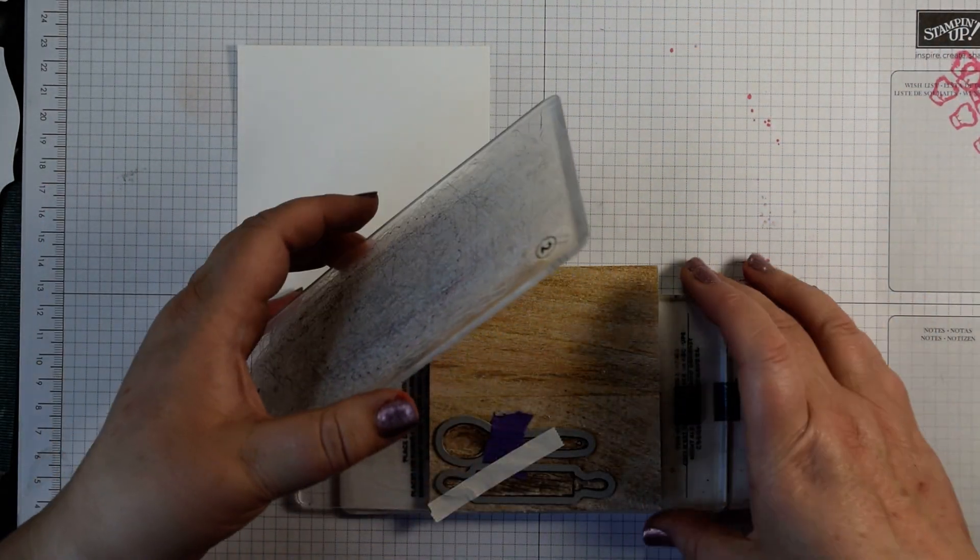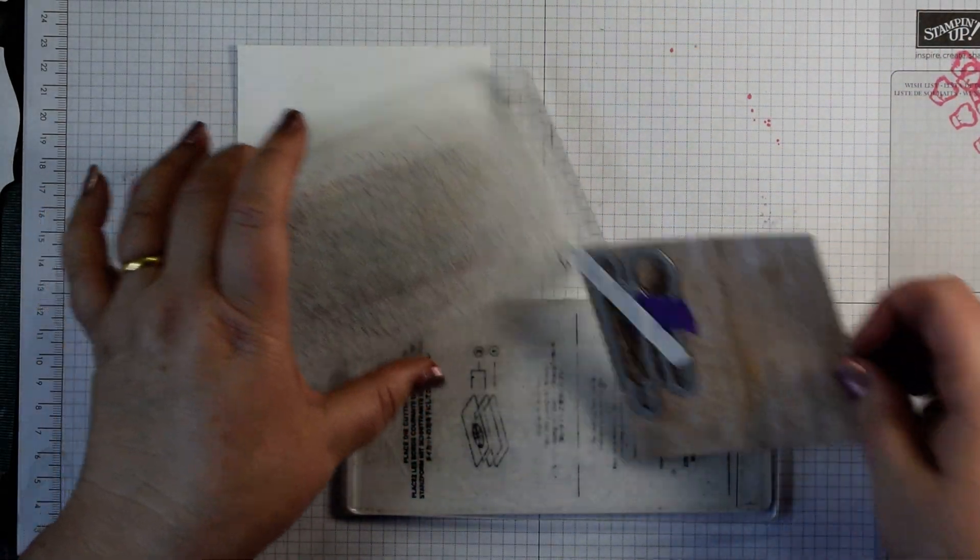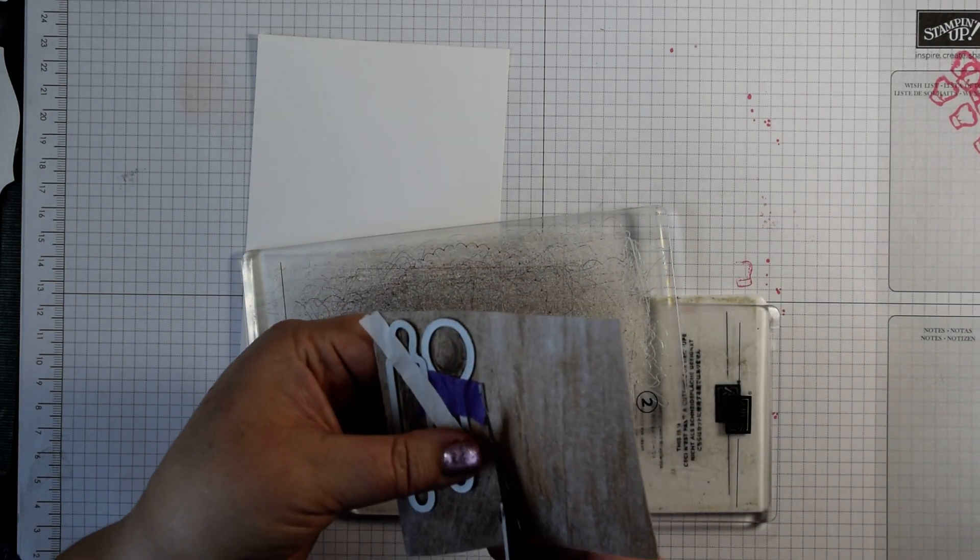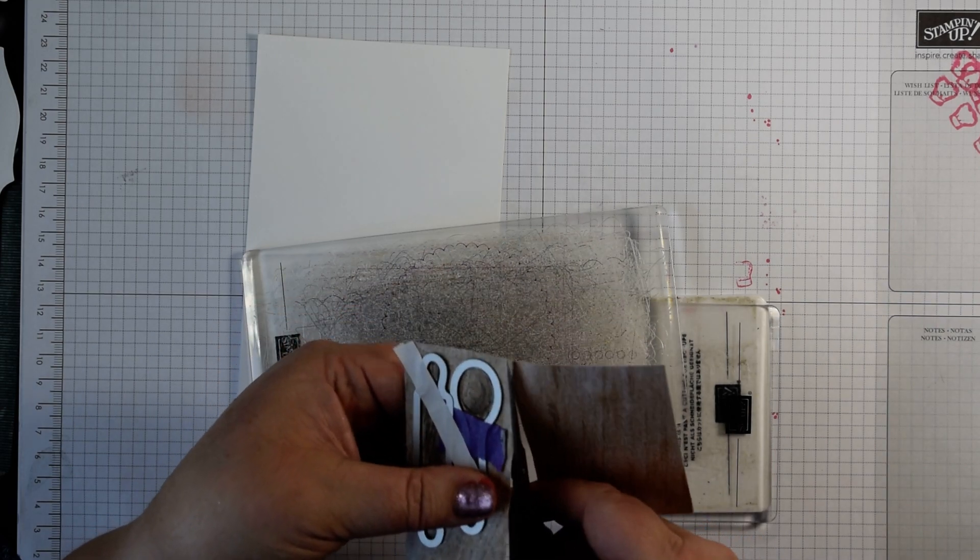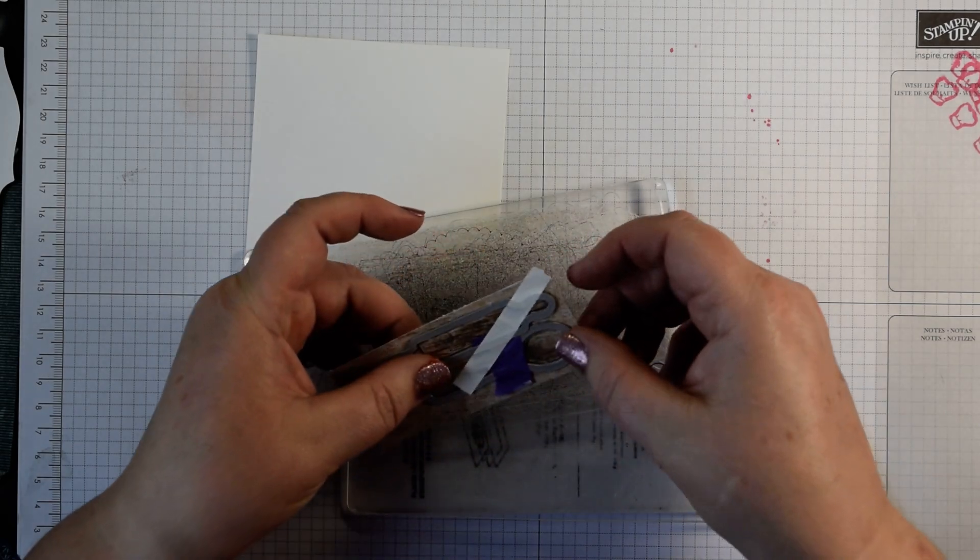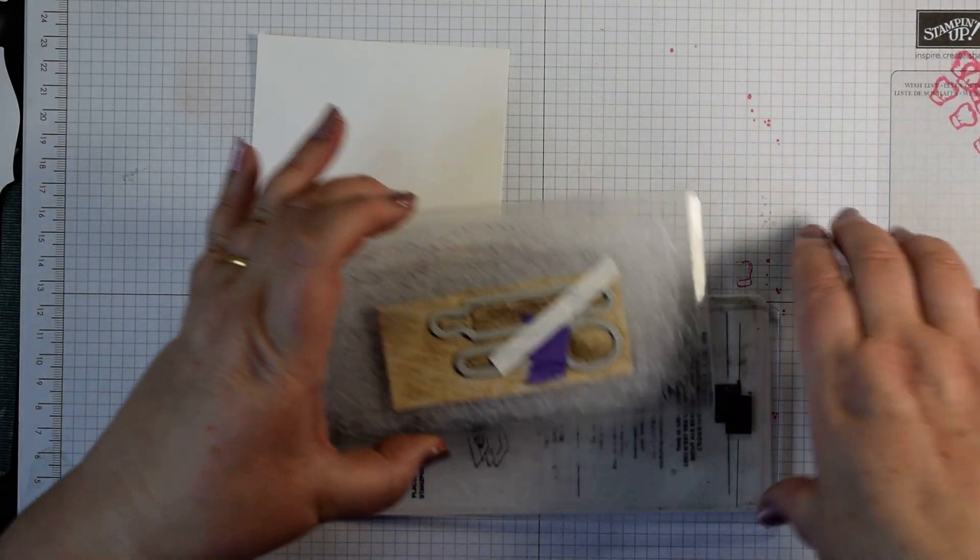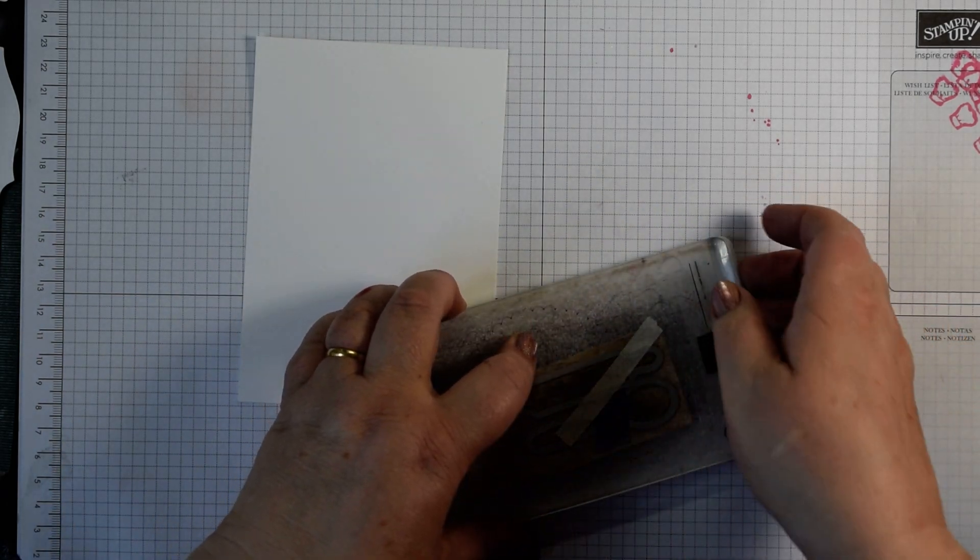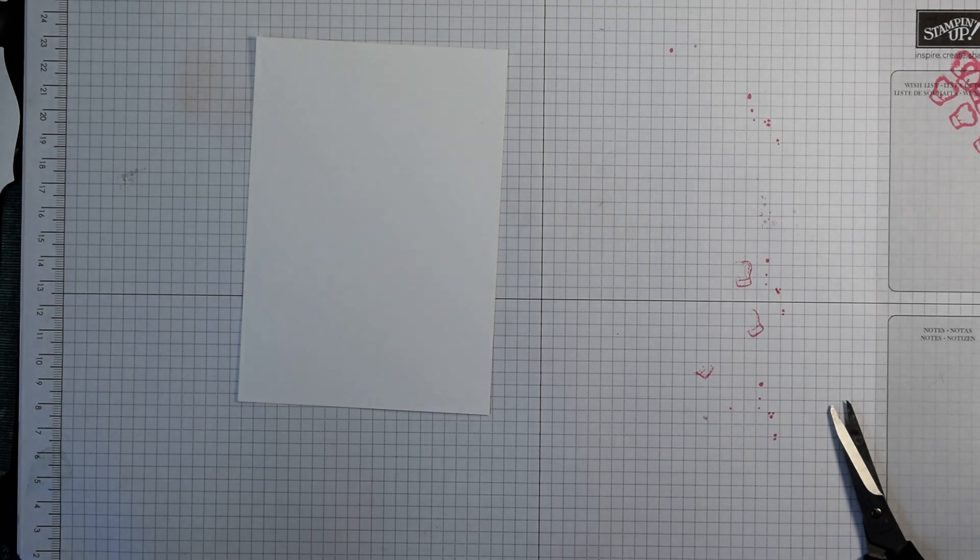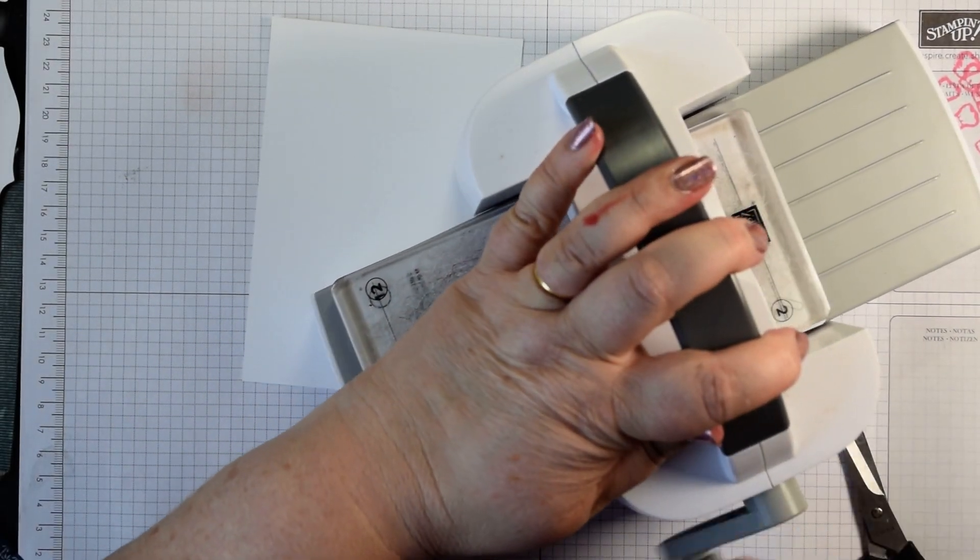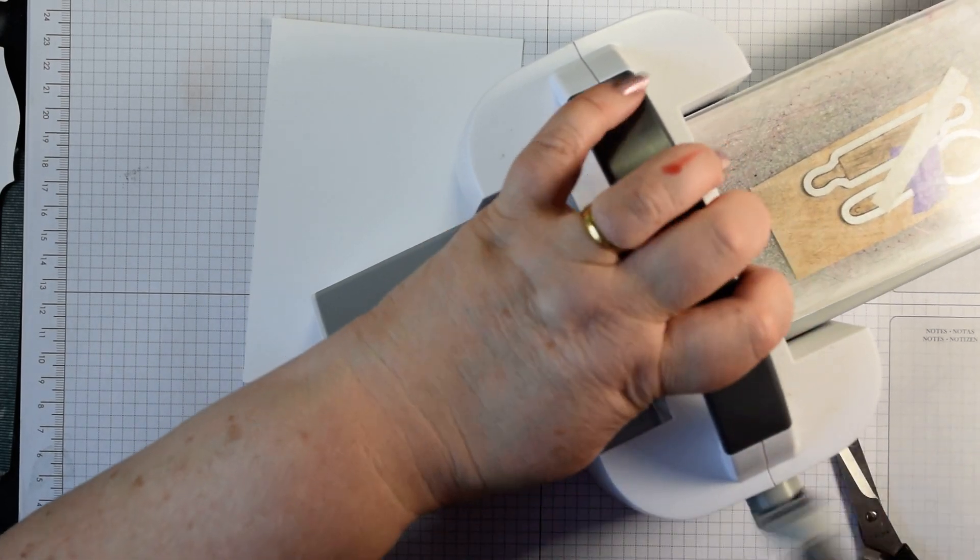Pop those through and just keep them away from those black lines at the end. That way you'll find it'll go through really easily. Just pop those through like so.